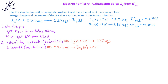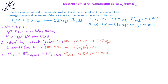Now that we know the cathode and the anode, we can use the reduction potentials to find the standard cell potential. E°cell equals 0.54 volts, which is the reduction potential for the cathode, minus 1.09 volts, which is the reduction potential for the anode. Once we subtract these values, we find that the standard cell potential is negative 0.55 joules per coulomb (volts).